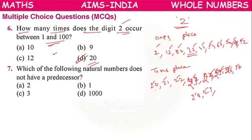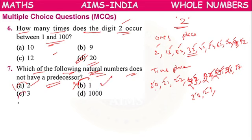Which natural number does not have a predecessor? For 2, the predecessor is 1. For 1, there is no predecessor because 1 is the smallest natural number — before it there is no natural number. For 3, the predecessor is 2. So the answer is 1, which does not have a predecessor.